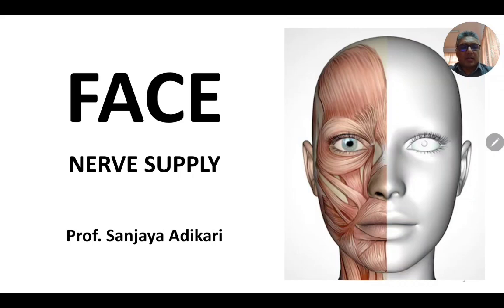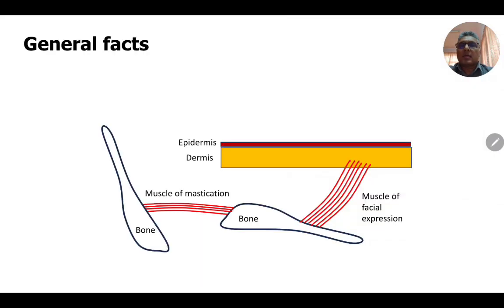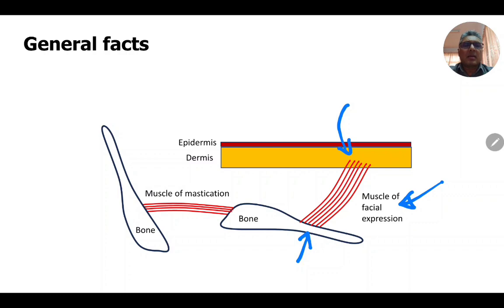The nerve supply of the face covers the structures in the region of the face: the skin and the muscles of facial expression. Muscles of facial expression are attached to bones on one side and the dermis of the skin on the other side, so when they contract they move the skin and assist in facial expressions.